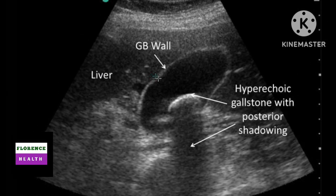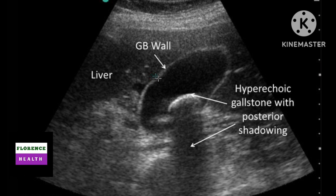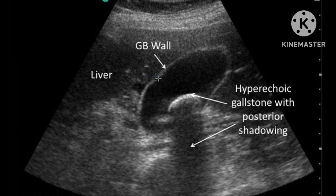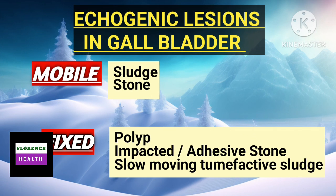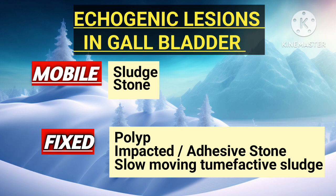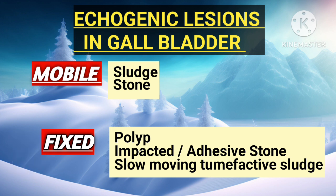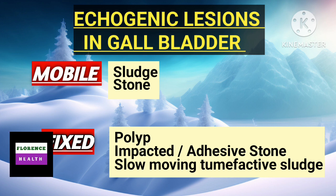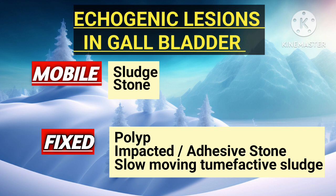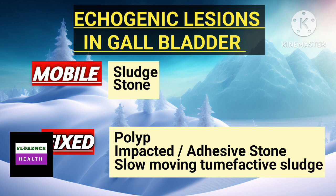This image shows an echogenic structure inside the gallbladder having posterior acoustic shadow. Now, some echogenic lesions inside the gallbladder are mobile, and some are fixed or immobile. Mobile echogenic lesions include sludge and stone. Immobile or fixed echogenic lesions include polyp, impacted or adhesive stone, and slow-moving tumefactive sludge.